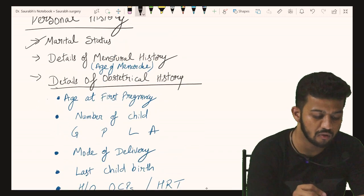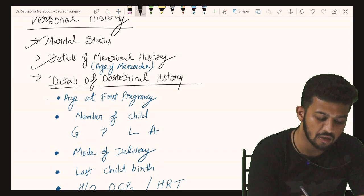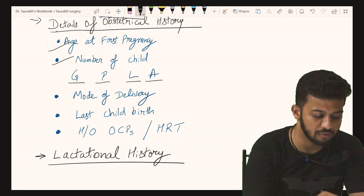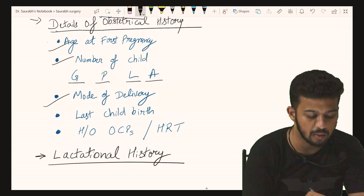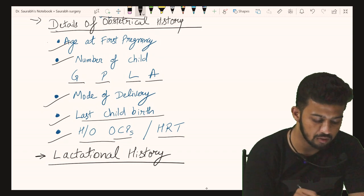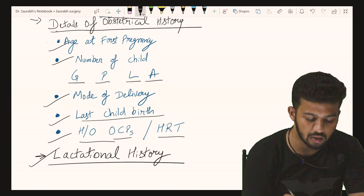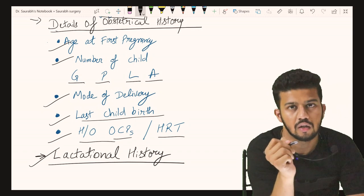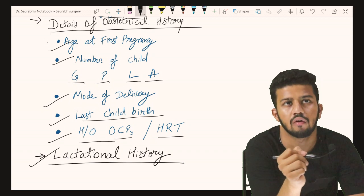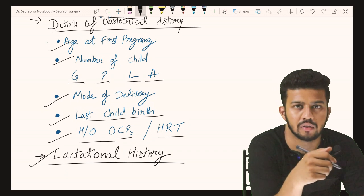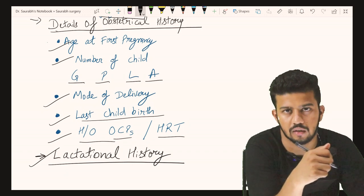We also ask about obstetric history: age at first pregnancy, number of children (gravida, parity, live births, abortions), mode of delivery, last childbirth, history of OCPs or hormone replacement therapy, and lactation history — whether the child was breastfed or not. This completes the history-taking format for a breast lump case.